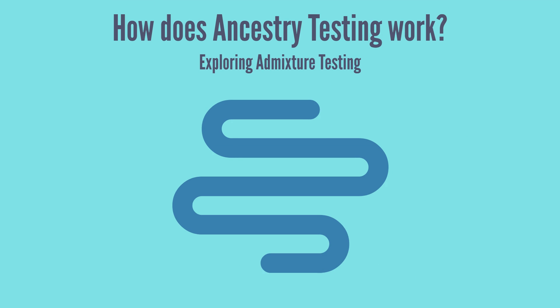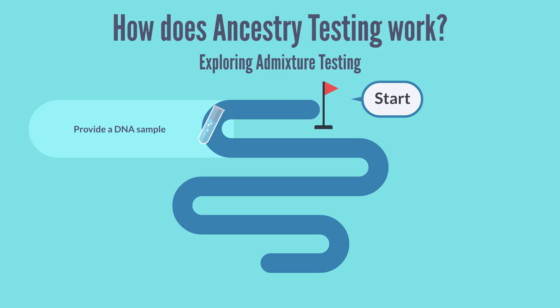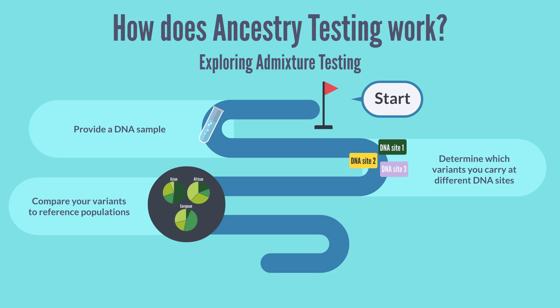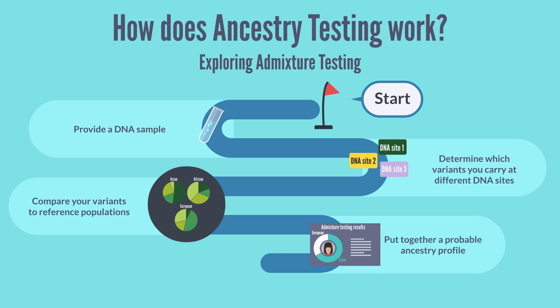So to summarize, how does ancestry testing work? Ancestry testing starts when a person provides a DNA sample to the testing company. Because humans share more than 99% of their DNA, the company does not look at most of your DNA. Instead, they zero in on a tiny fraction where variation is common. Your DNA is analyzed to determine which variants you carry at specific sites, then compared to reference populations to determine which population you are most likely to share ancestry with. After analyzing hundreds of thousands of DNA sites, companies use complex mathematical formulas to provide a probability of your ancestry.